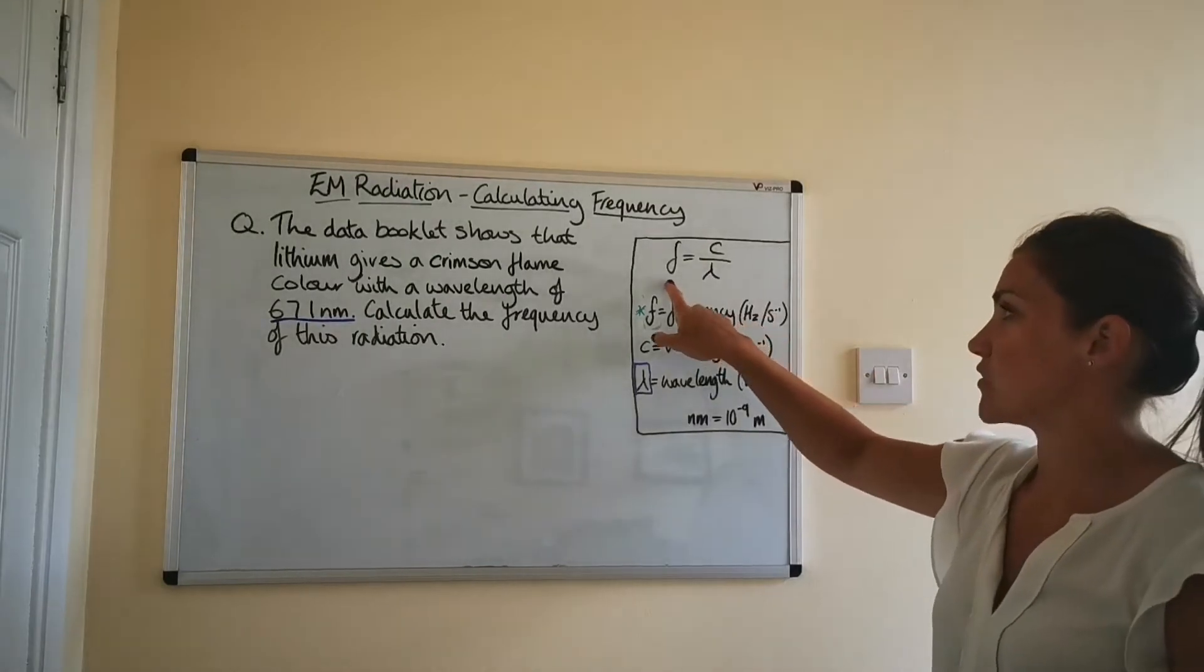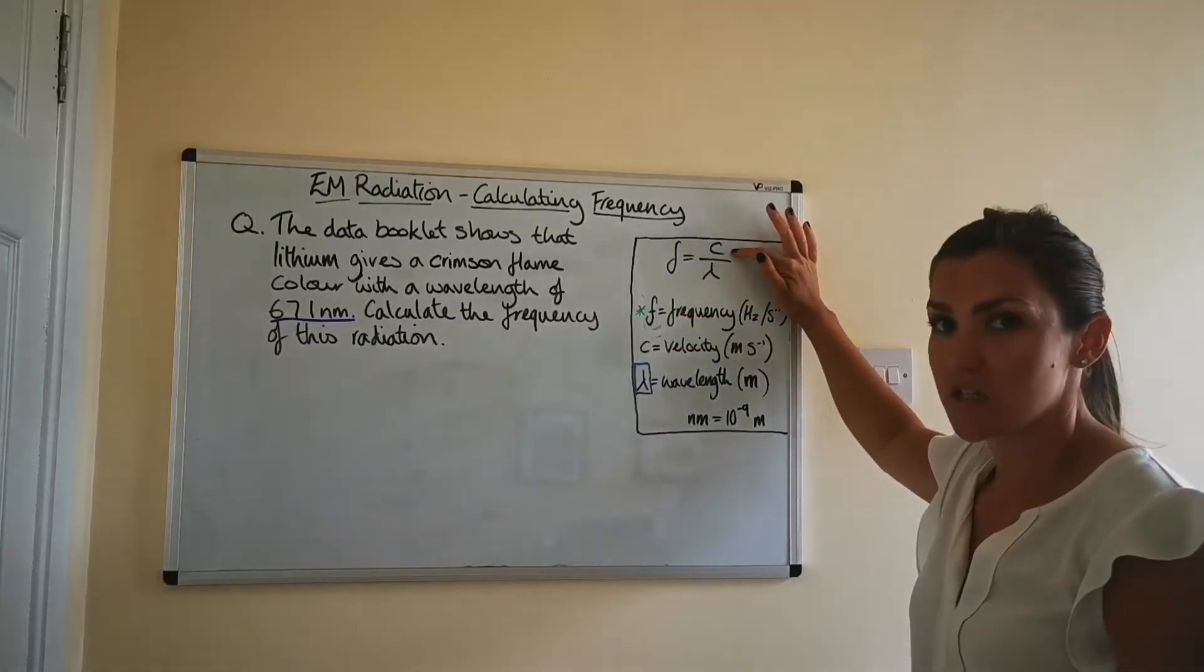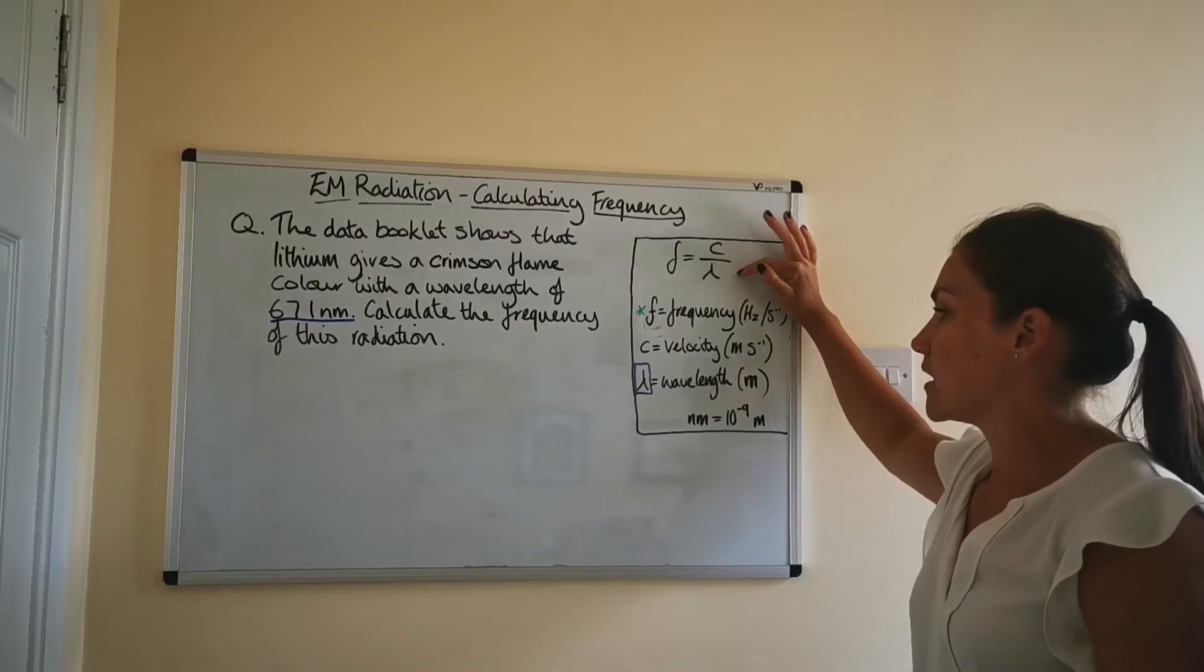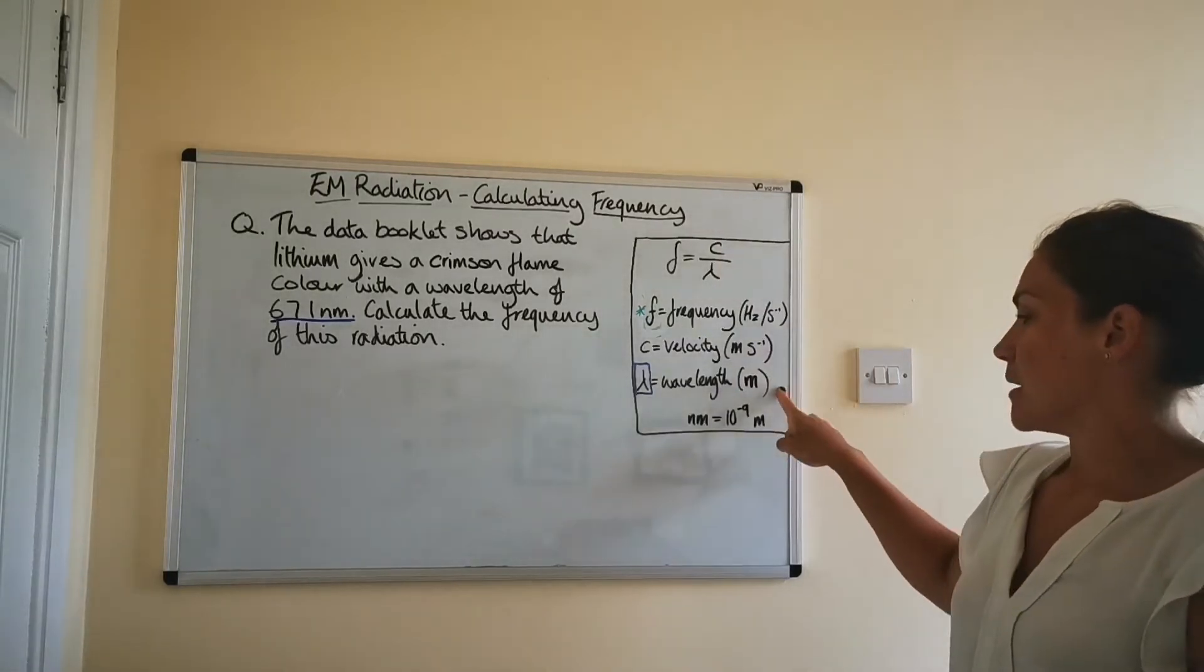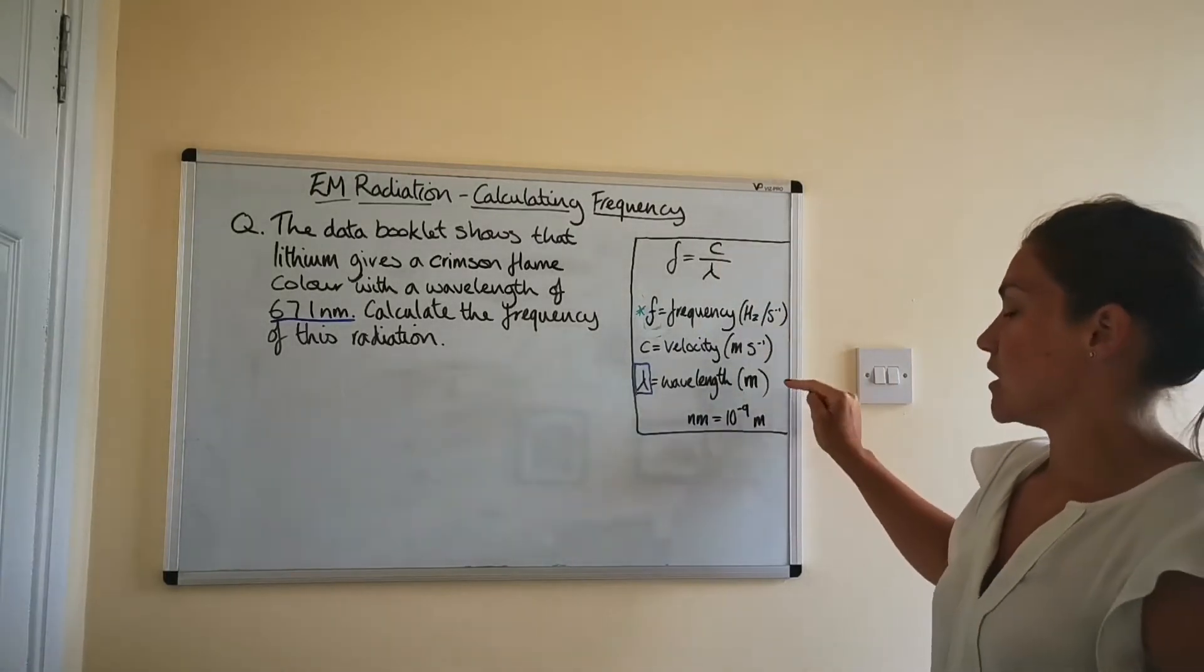Just remember, f is for frequency, c is the velocity or speed of light in a vacuum, and lambda is the wavelength. The thing to remember is that the wavelength for this equation is in meters.